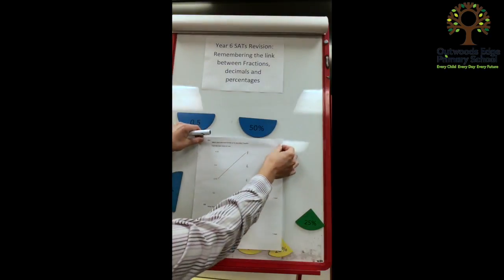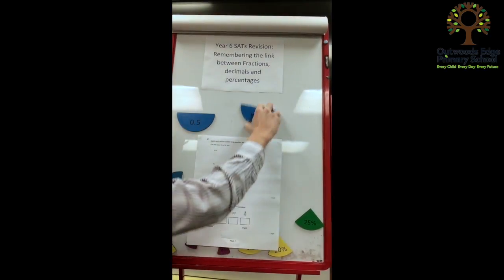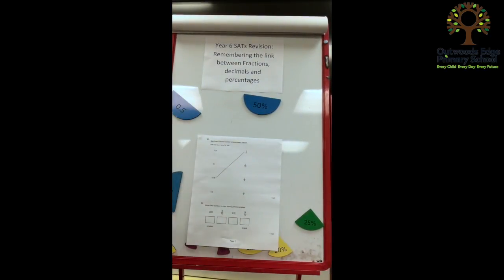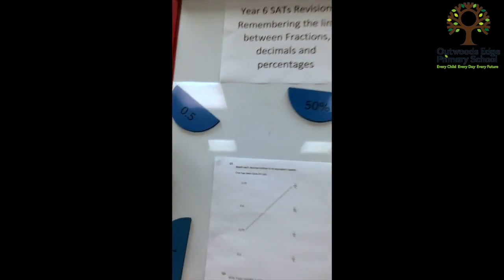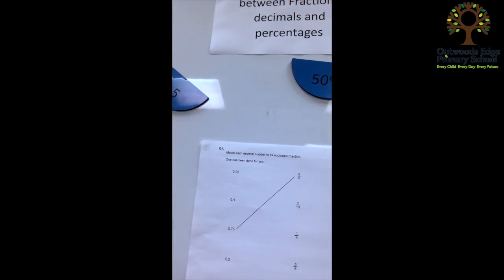And we're going to have a look at this problem next. And you can see how the level of challenge increases slightly for this one. So here, we've got to match up. We've got 0.25, 0.4, 0.2, 2 tenths, a quarter and 2 fifths. 3 quarters and 0.75 has been matched up already.